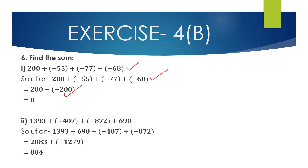Now we have 200 + (−200). Since plus and minus gives minus, 200 − 200 = 0. So 200 + (−55) + (−77) + (−68) = 0.